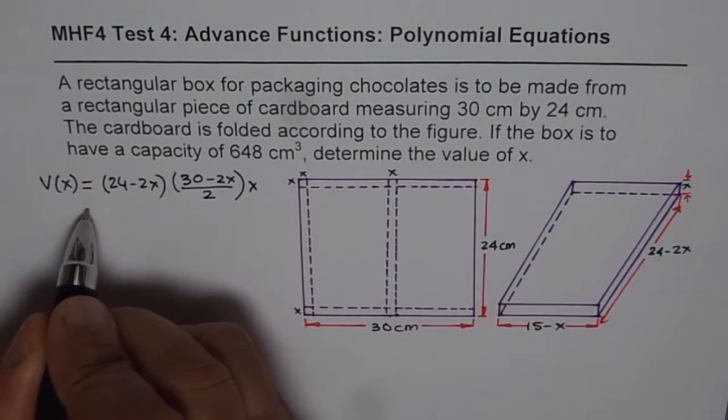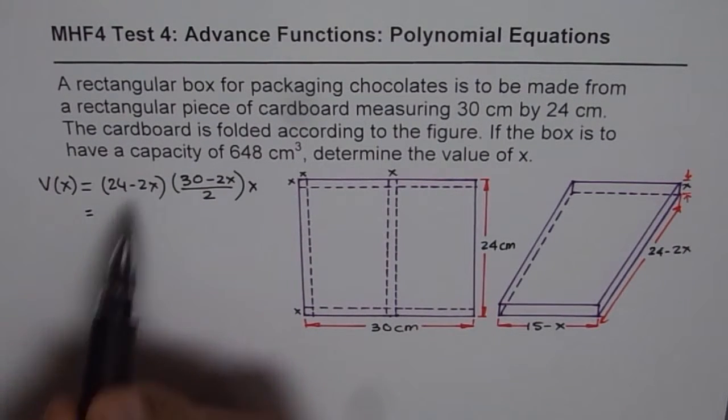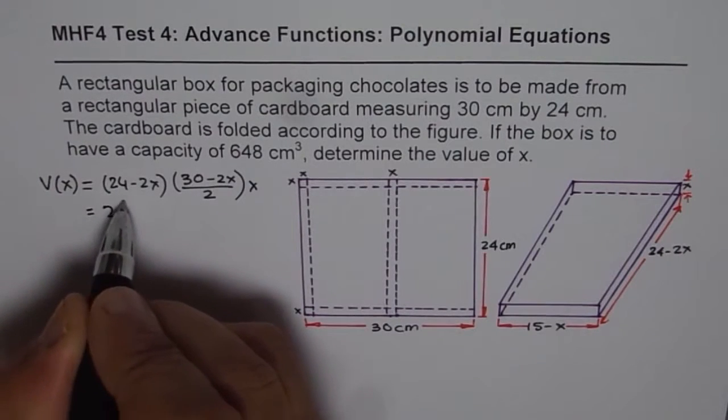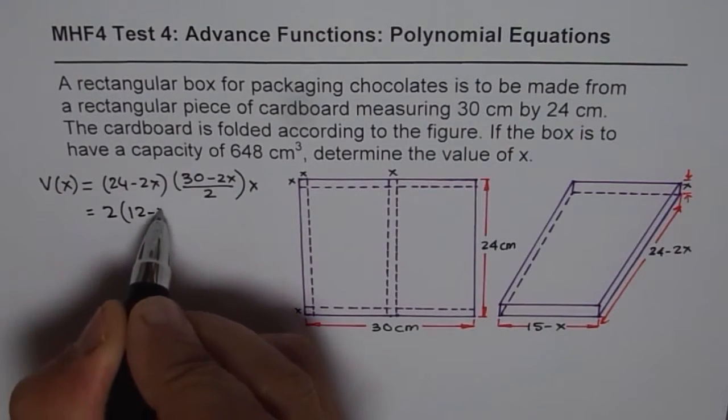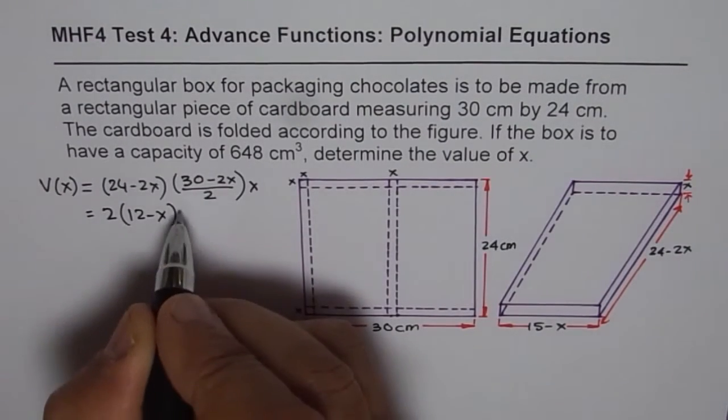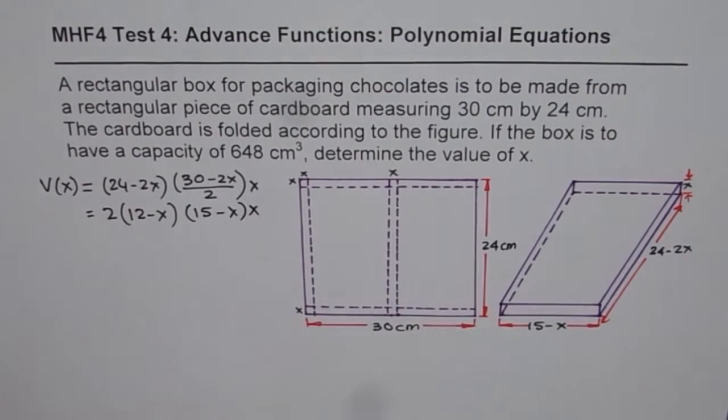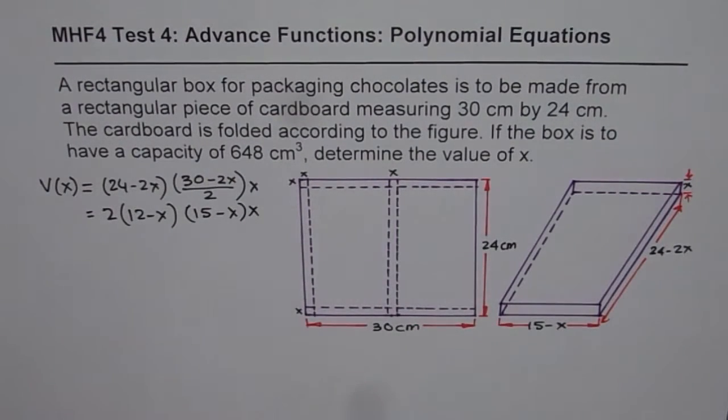Now in the test you should simplify this formula. 24 minus 2x, you can take 2 common. So it becomes 12 minus x. And here you can divide both by 2. So you get 15 minus x times x. So that becomes the volume formula.